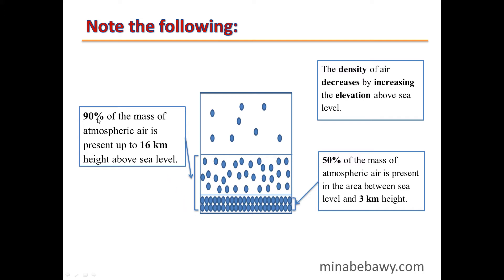Also, 90% of the mass of the atmospheric air is present up to 16 km above sea level. This means the remaining 984 km of the atmospheric envelope contains only 10% of the atmospheric air mass, confirming that the density of air decreases with increasing elevation.